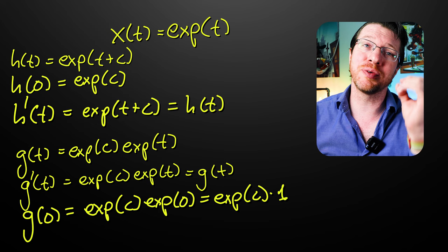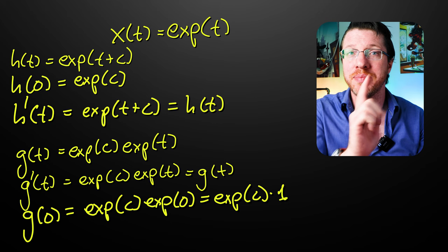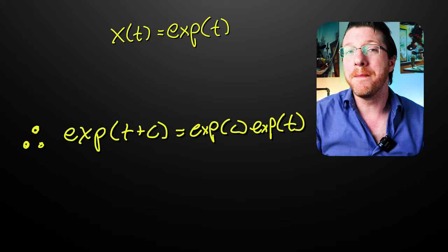H and g satisfy the same initial value problem. Picard says that there's only one solution. So they must be the same. Bam! Exponent of t plus c is equal to the exponent of c times the exponent of t.